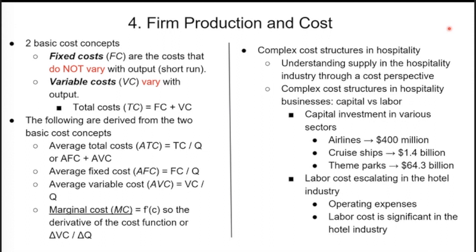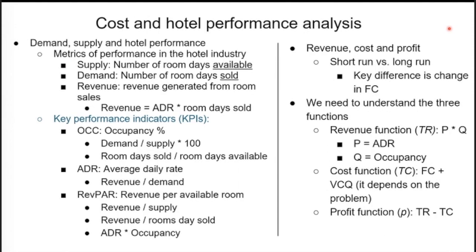Complex cost structures in hospitality take into account capital versus labor. Capital investments apply to sectors such as airlines, cruise ships, and theme parks — any initial investment needed to get the business going. Labor costs usually escalate in the hotel industry because they're correlated with operating expenses and tend to be a significant portion of total costs. For hotel cost and performance analysis, key performance metrics include supply (number of rooms available), demand (rooms sold), and revenue (from room sales). Revenue equals ADR times room sales. Key performance indicators are occupancy percentage, ADR, and RevPAR.